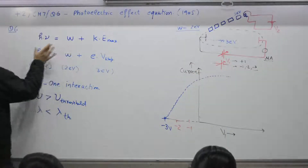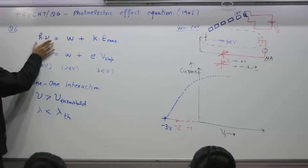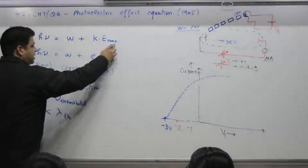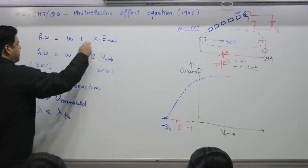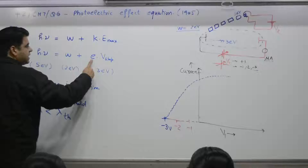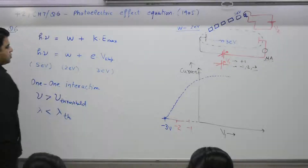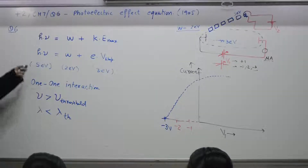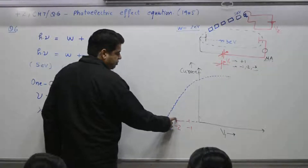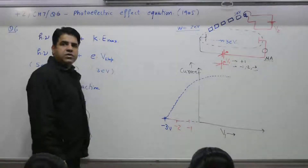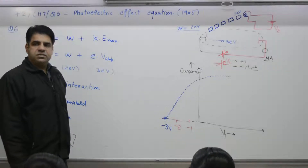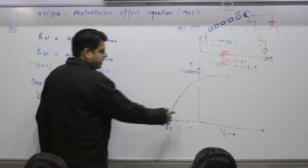The total energy of the photon is used for the work function, and the electron (the topper) comes out with maximum kinetic energy. This maximum kinetic energy — you can stop this electron — that is why we write it as e·V_stopping. If you plot the graph, the current value at minus 3 volts is zero; at minus 2 volts there is some value, and some electrons will reach the surface.